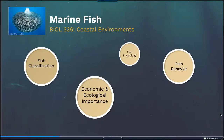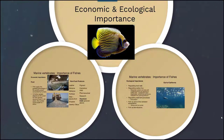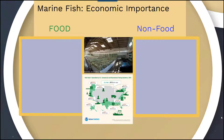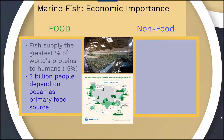Now let's look at the economic and ecological importance of fish. Marine fish serve many purposes economically, both as food and non-food. In terms of food, fish supply the greatest percentage of the world's proteins to humans — approximately 15%, though that statistic is slightly older so it may be even more today. Approximately 3 billion people depend on food from the ocean as their primary food source, so it is quite important that fish stocks are maintained.